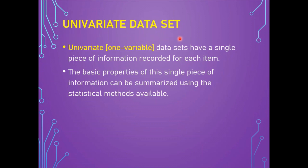The univariate or one-variable datasets have a single piece of information recorded for each item. The basic properties of this single piece of information can be summarized using available statistical methods. For example, statistical analysis of data collected regarding income level through a marketing survey reveals the distribution of income, specific income level, and variation in income level. Statistical analysis of quality control regarding production could also be used to keep a check on quality.